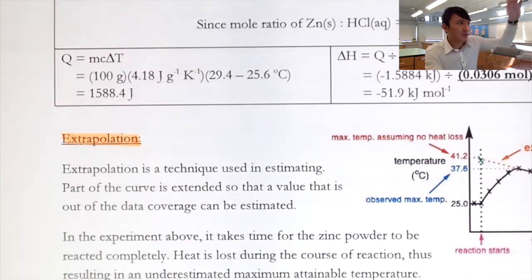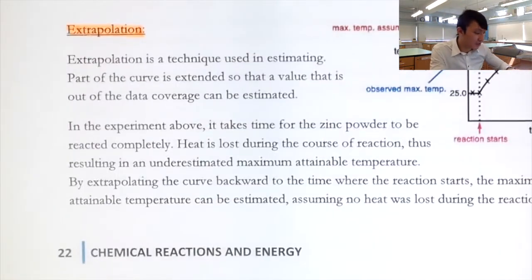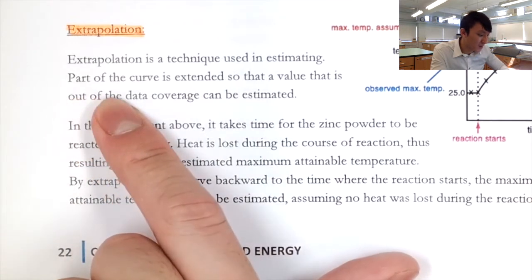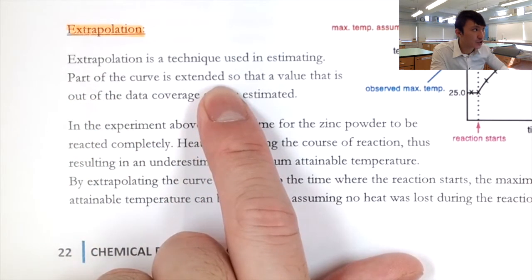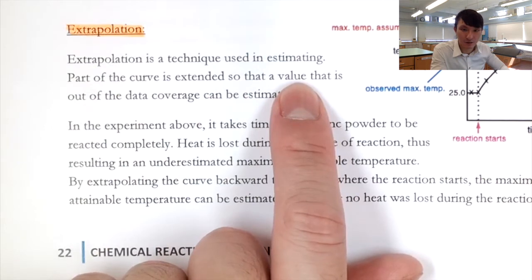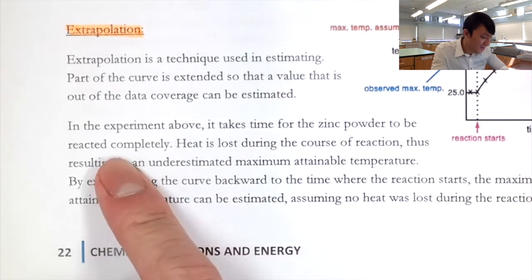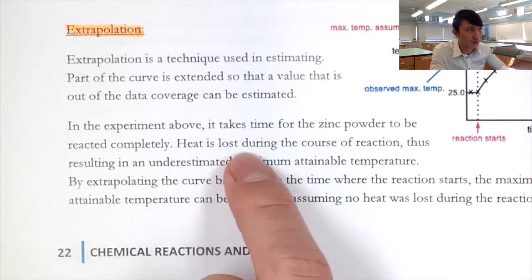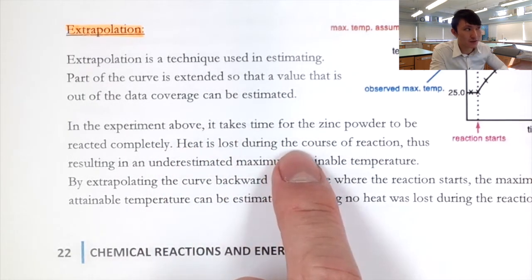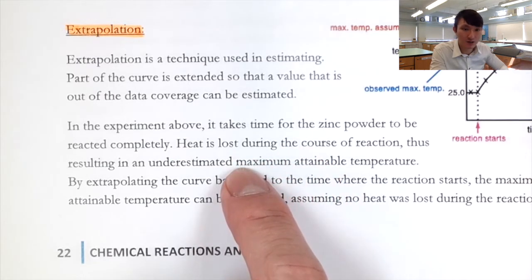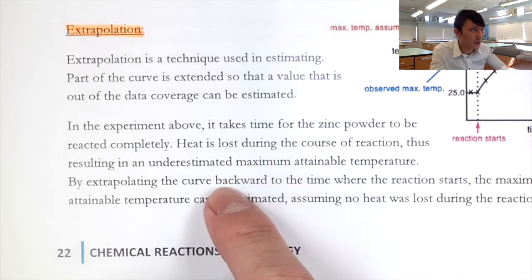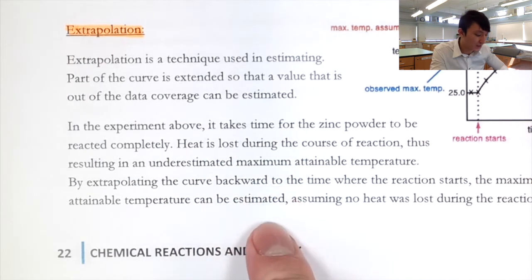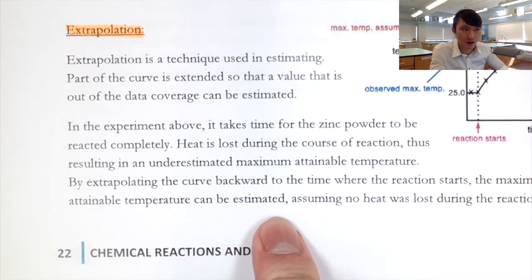Extrapolation is a technique where an estimated part of the curve is extended so we can trace back a value not covered by the observed data. In this experiment, it takes time for the zinc powder to react completely, and heat is lost to the surroundings during this process, so the maximum temperature is underestimated. By extrapolating the curve backwards, we can rectify our results.